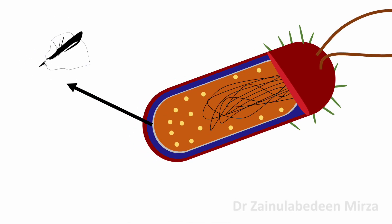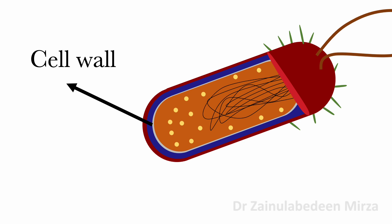Cell walls are found outside most prokaryotic cells, and they give the cell its shape and protect the bacteria cells. Cell walls provide an extra layer of protection and prevent dehydration. Most bacteria have peptidoglycan, which is a polymer composed of linked carbohydrates and small proteins.